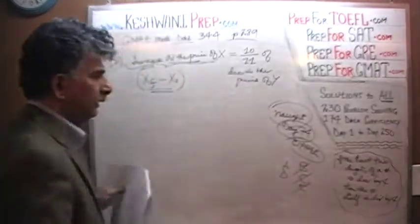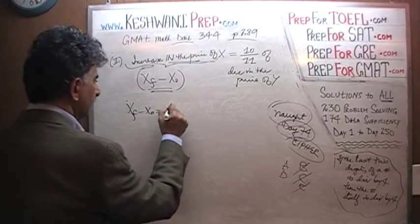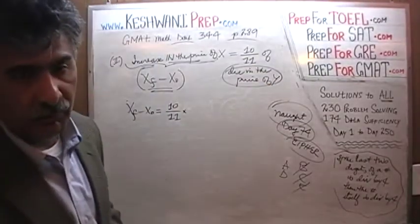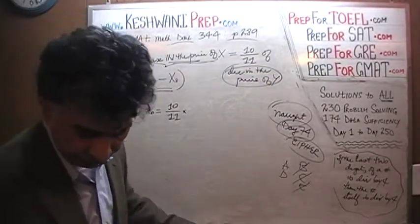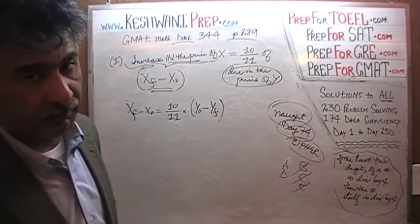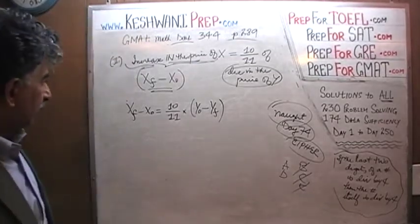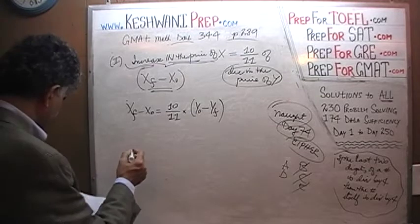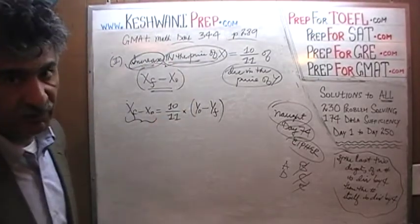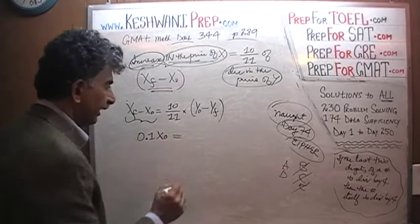All we want is to find the ratio of the original prices. The increase in the price of X is 0.1 times X-naught — that's 10% of X-naught. This equals 10 over 11 times the decrease in the price of Y, which was also 10% of the original price — 0.1 times Y-naught. So we have 0.1 X-naught equals (10/11) times 0.1 Y-naught.